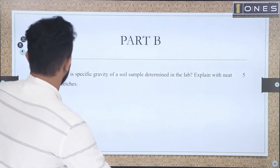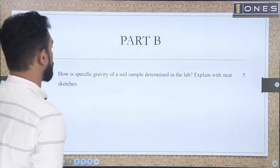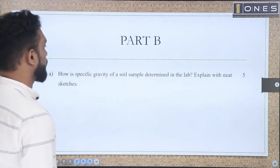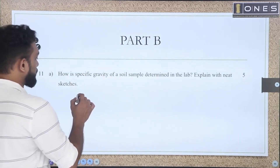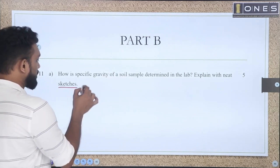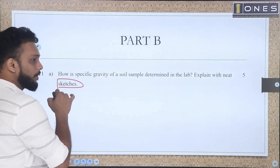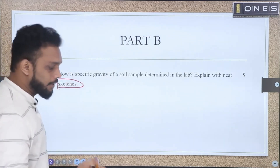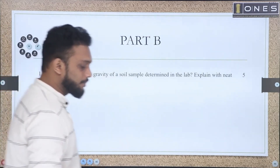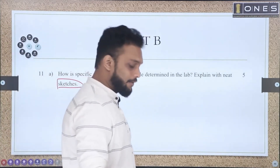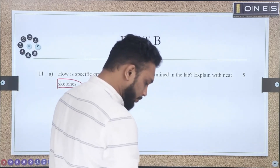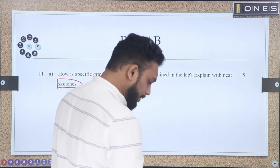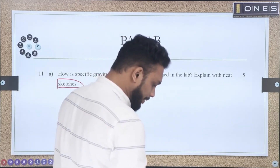Let's look at how specific gravity of a soil sample is used in the lab. Explain with neat sketches. Sketches are added to the sketch marks. If you look at the mark distribution, how do I mark the sketches?